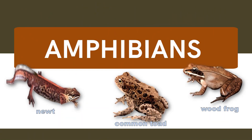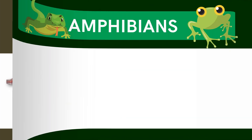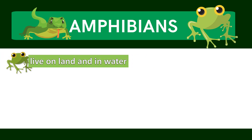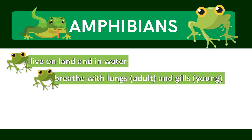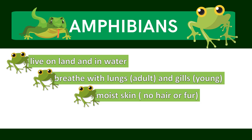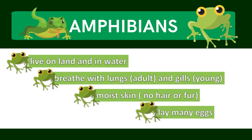Examples of amphibians are wood frog, common toad, and wood frog. Let us read the characteristics of amphibians: amphibians live on land and in water, they breathe with lungs and gills, they have moist skin, and they lay many eggs.